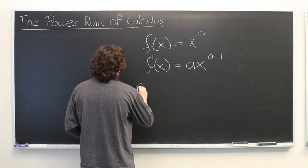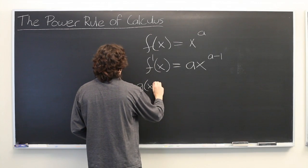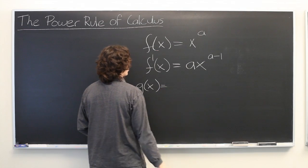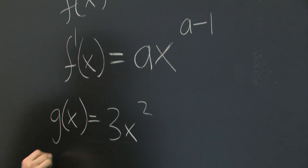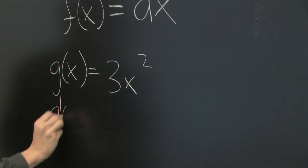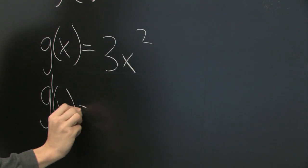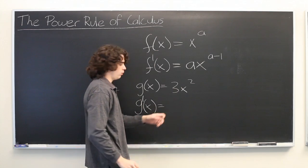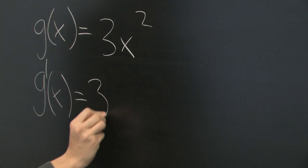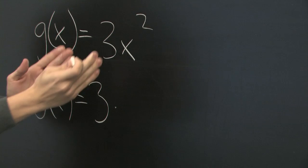Let's say that we've got g(x) equals 3x squared. We want to know what the derivative of g(x) is. Well, since 3 is just a constant, we can pull that out. 3 times whatever the derivative of this is.